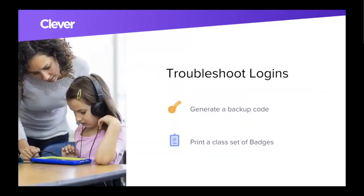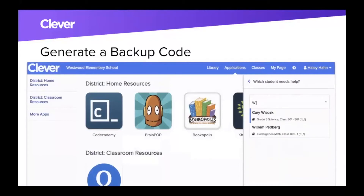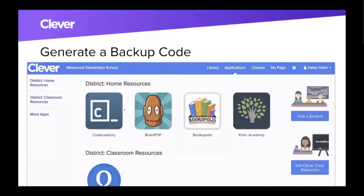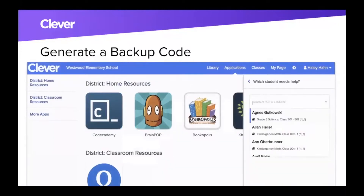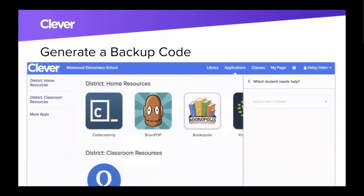The first thing is actually getting students into Clever. If you have a new student or a student comes back from spring break and has forgotten their login, you can generate a backup code from your Clever dashboard and get that student logged in immediately, then worry about figuring out their password at another time. You can also print a class set of badges, which are our developmentally appropriate login method for pre-K, K, and 1st grade mostly. To generate a backup code, click 'Help a Student' on the right-hand side of your portal, search for that student, and you'll get a one-time-use code to type into their computer.